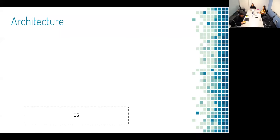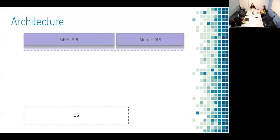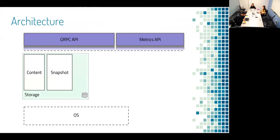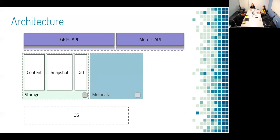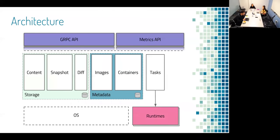What's the architecture here? At the bottom level we have the operating system, and let's see how ContainerD interfaces with that. At the topmost level we have the gRPC API and metrics API — the clients will be interacting with these APIs. We have storage, which includes content, snapshot, and diff. We have metadata, which includes images and containers. And then we have tasks, which interface or interact with the runtime. Runtimes can be swappable. And then we have events, and this is across all the services.